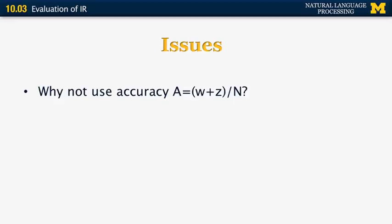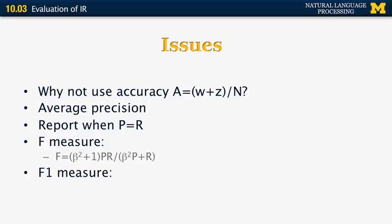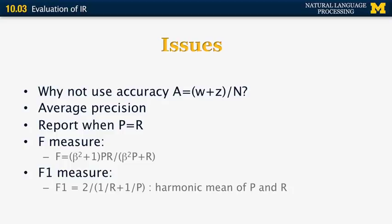One issue is how to report the performance of a system over a large number of queries. This is typically done by averaging the precision over all the possible queries in the evaluation. Another approach is to report the value at which precision equals recall, so the system doesn't artificially inflate precision at the expense of recall or vice versa. Another metric used to report a single number is the F-measure, a weighted combination of precision and recall. In practice, what is more commonly used is the F1 measure — two divided by the sum of the reciprocals of recall and precision, the harmonic mean of precision and recall. Research papers very often report F1 as a single metric.